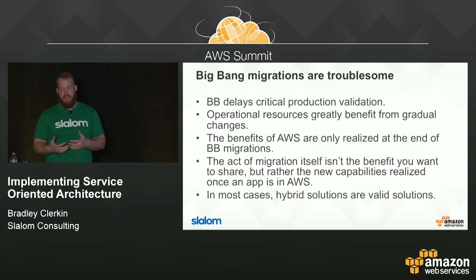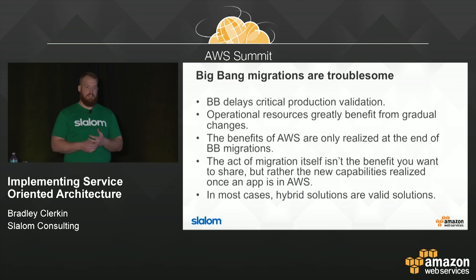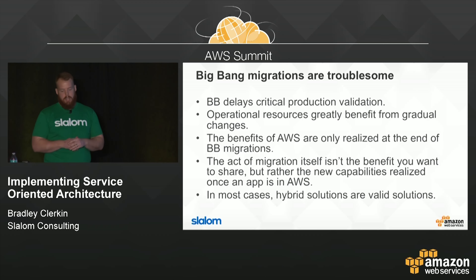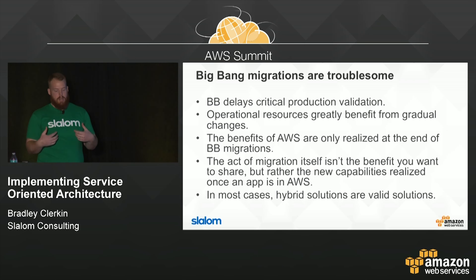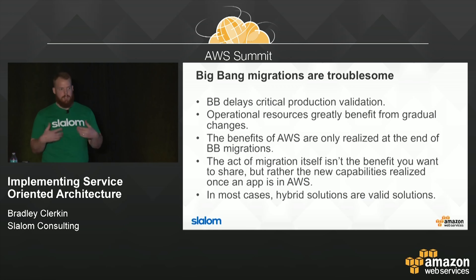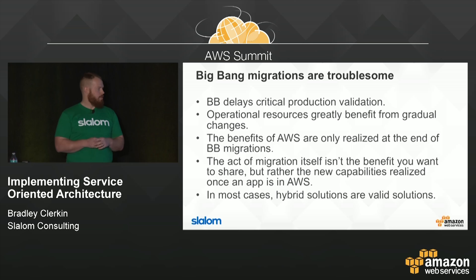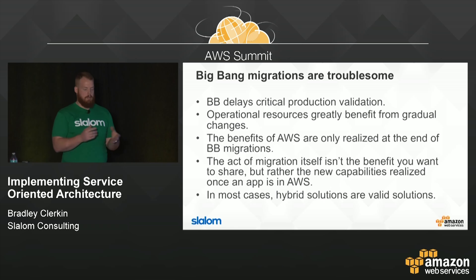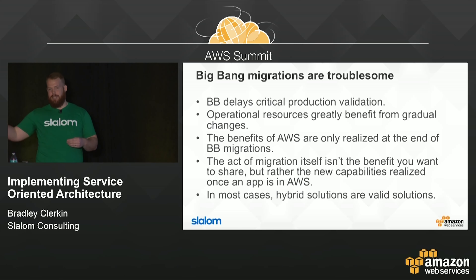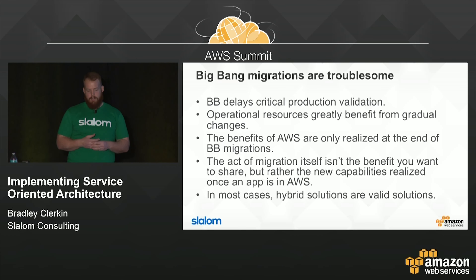Not only is production validation delayed until the end with big bang, but all the benefits of AWS might not be happening at a production level until the end. The actual migration project itself isn't the benefit you want to share — it's the new capabilities realized once you're in AWS. Once you get there, you're just starting. Why delay that? Big bangs probably come from the data center migration days where longest lead times were procurement and cross-connects, which could push migrations out years. But now we have a choice, so try to avoid big bang wherever possible.